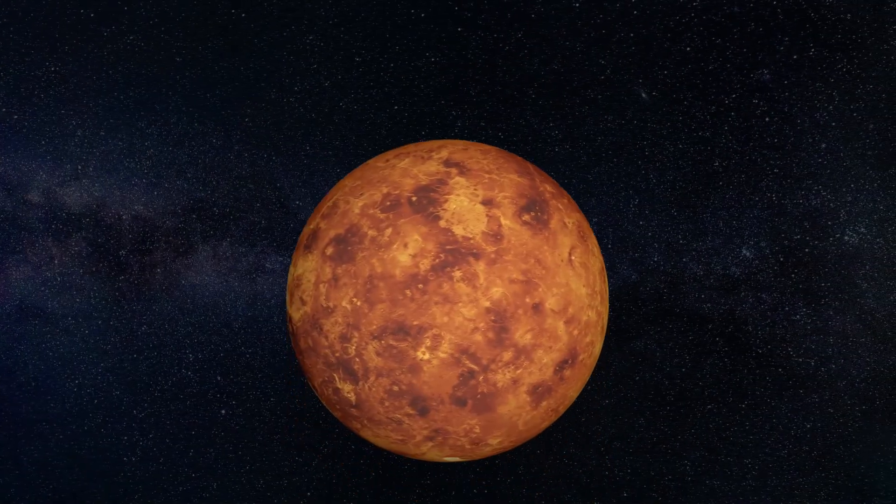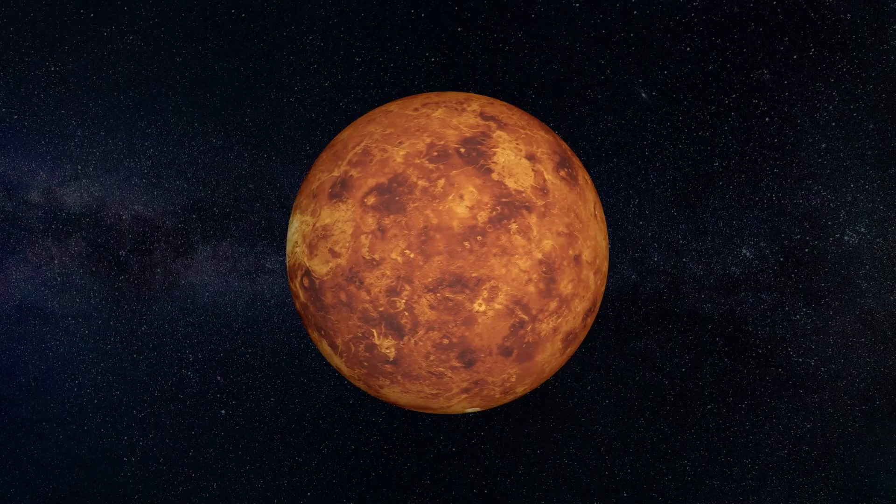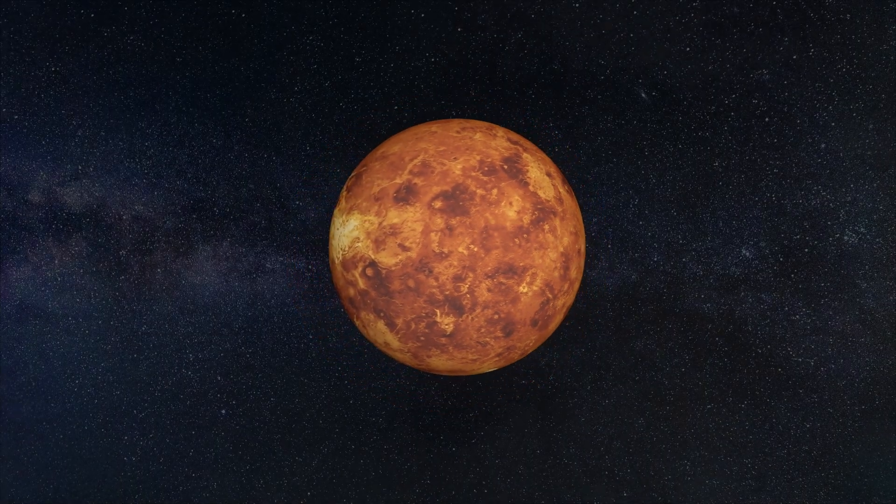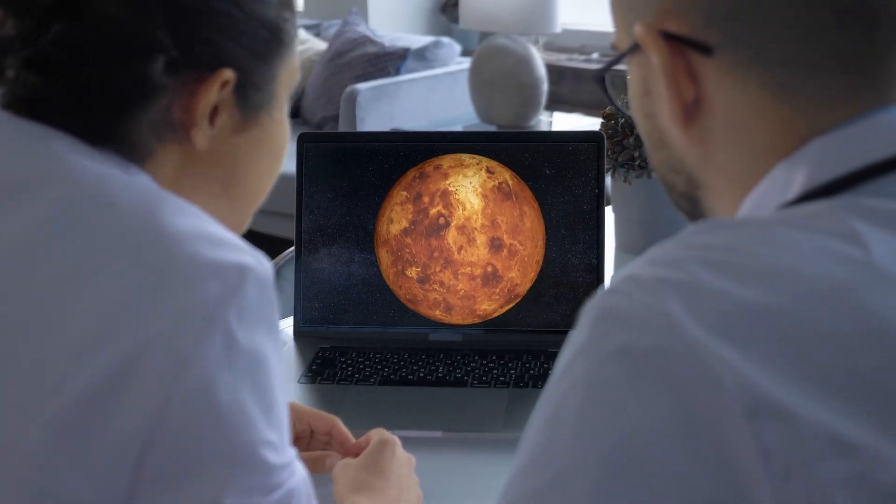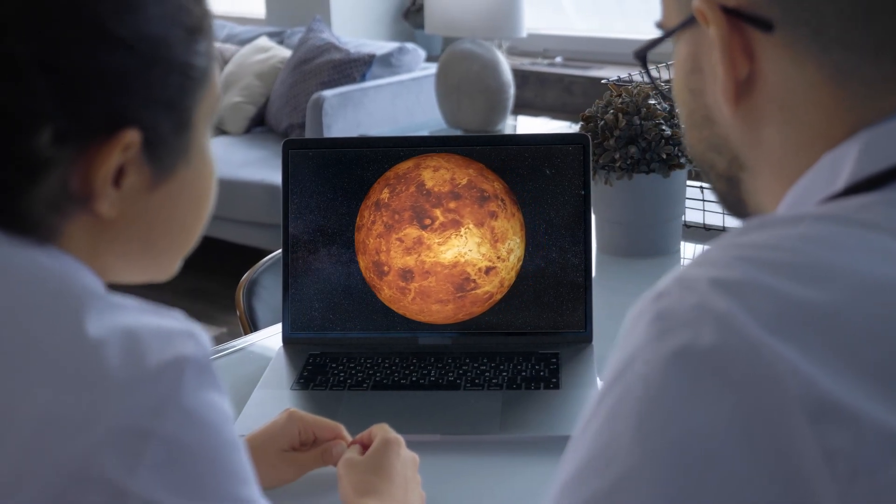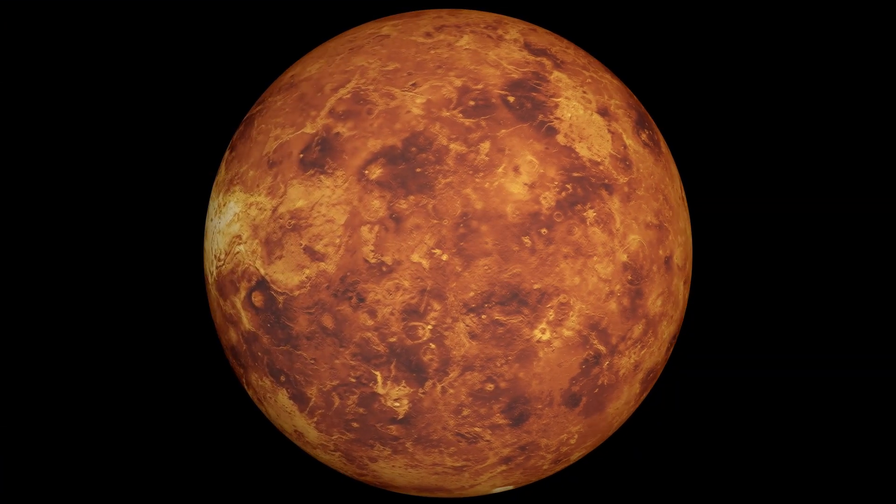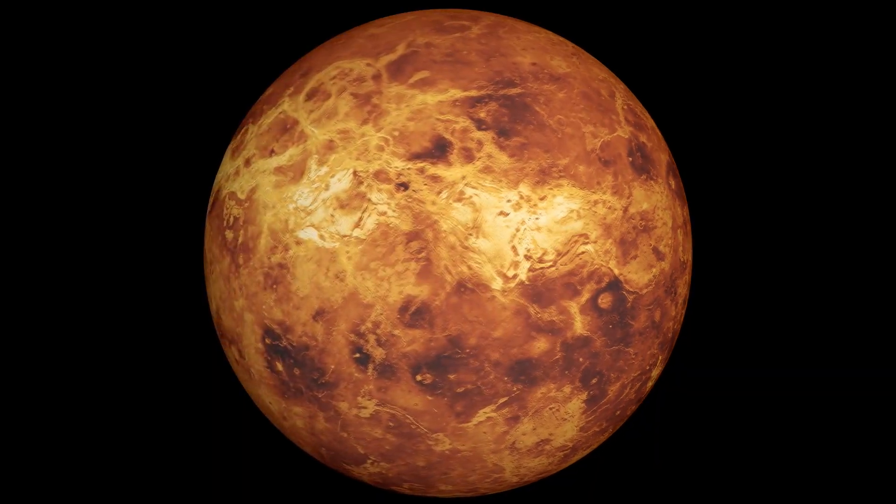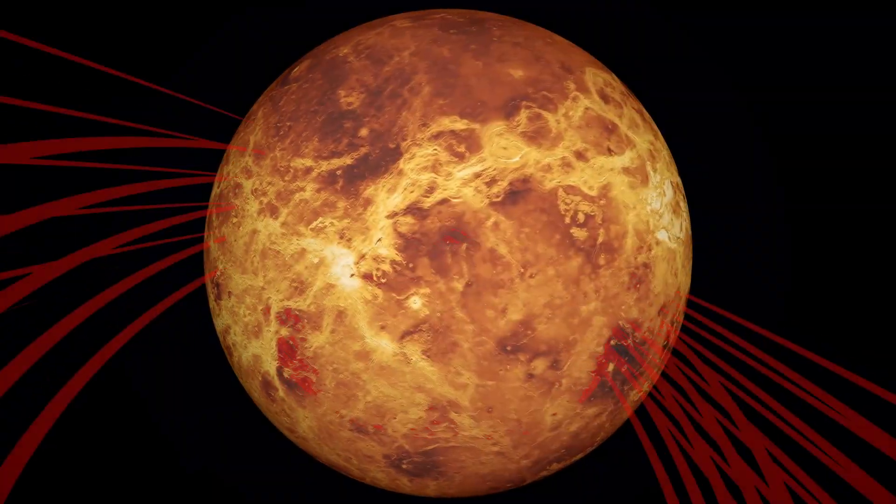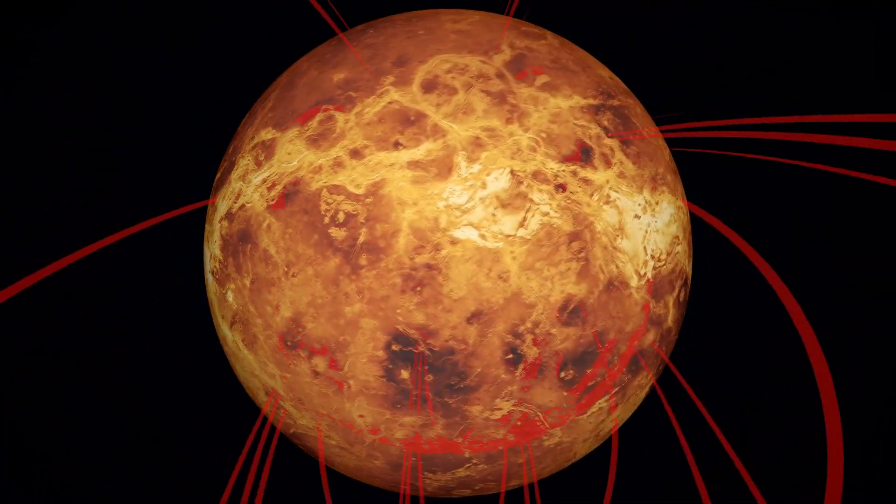This hypothesis offers an explanation as to why some scientists believe Venus is flipped by 177 degrees, while others argue that it, in fact, has a tilt of only 3 degrees. A more controversial argument is that Venus gradually slowed down and reversed its rotation because of its interaction with the Sun's magnetic field.